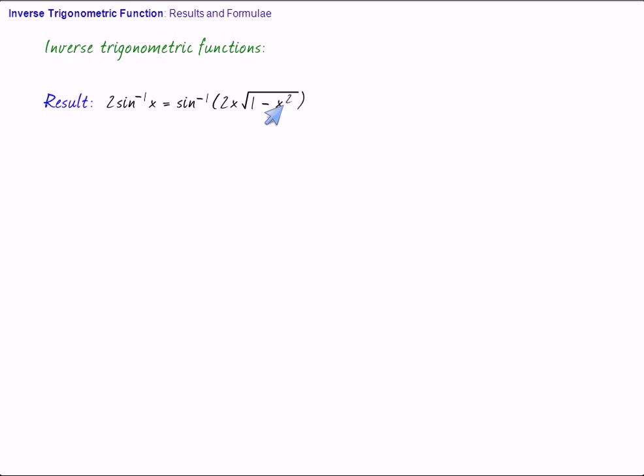Even this result is not true unless the proper range for x is specified. For instance, it is not even true for x equals 1. For x equals 1, LHS will be sine inverse 1 is pi by 2, so LHS is pi. On the contrary, RHS is 0.